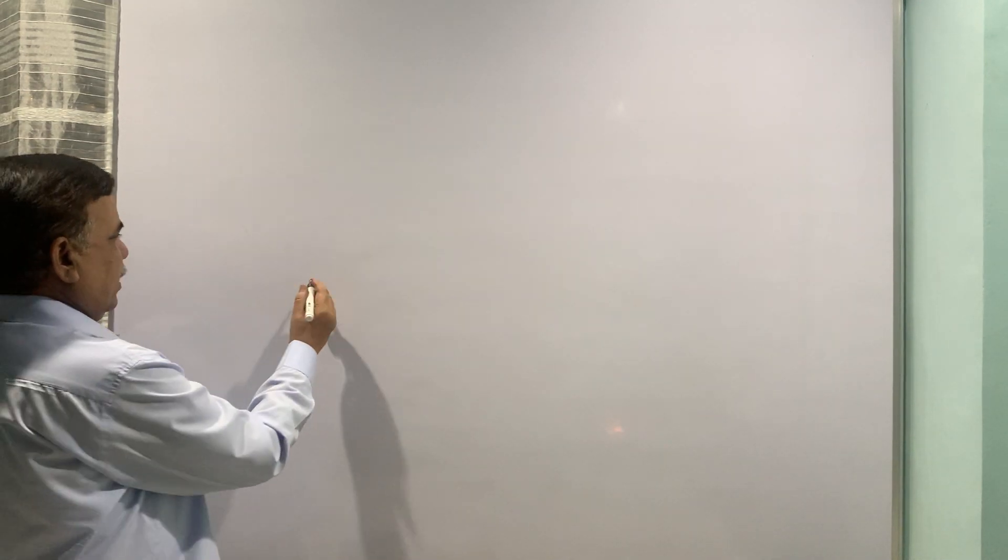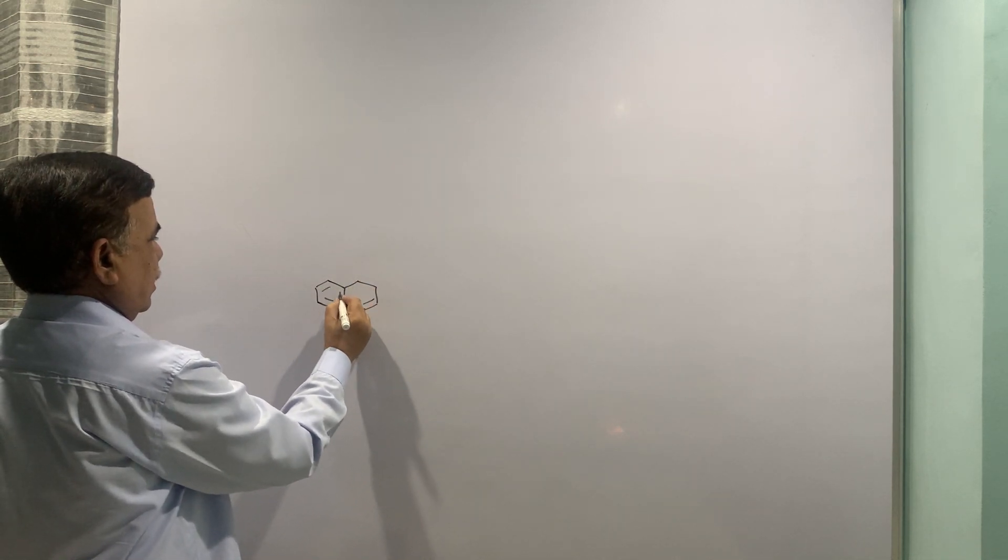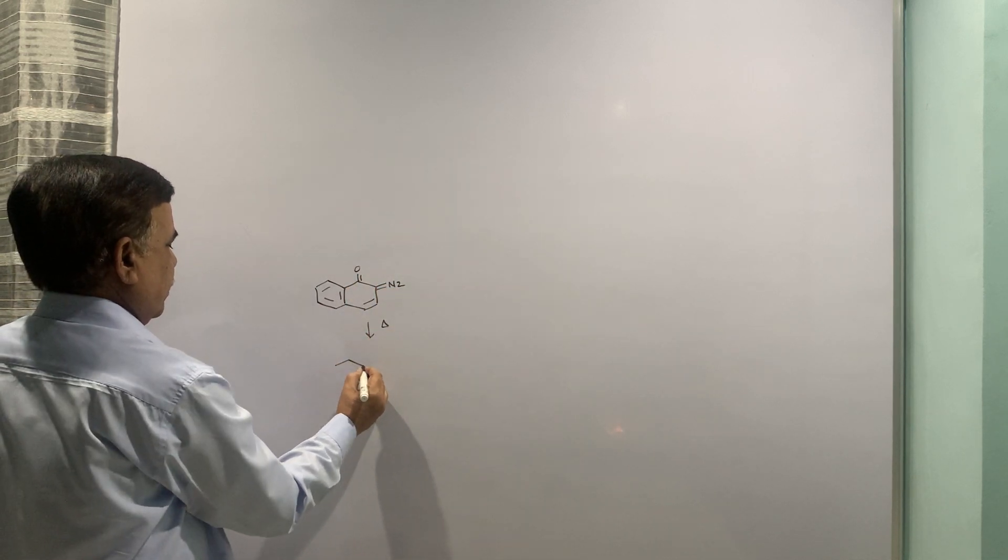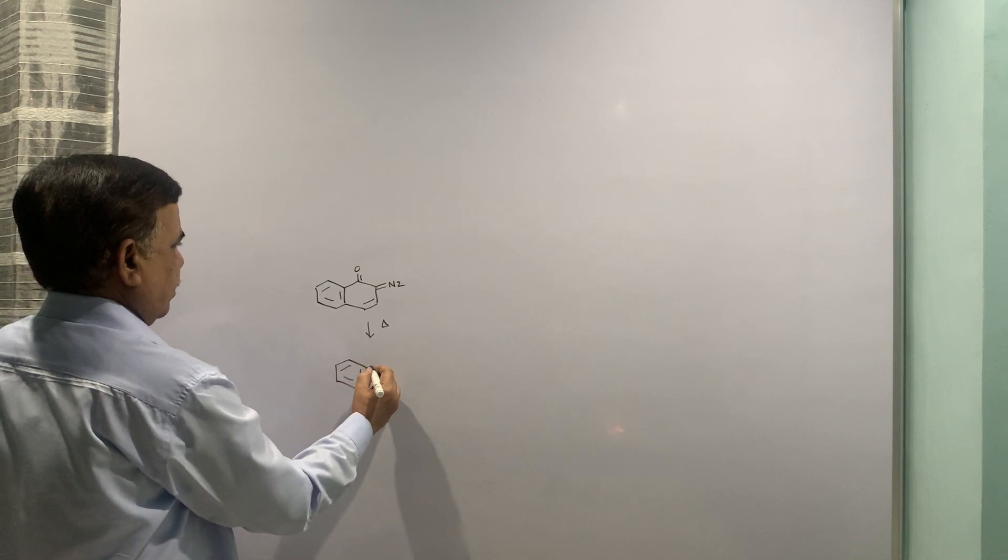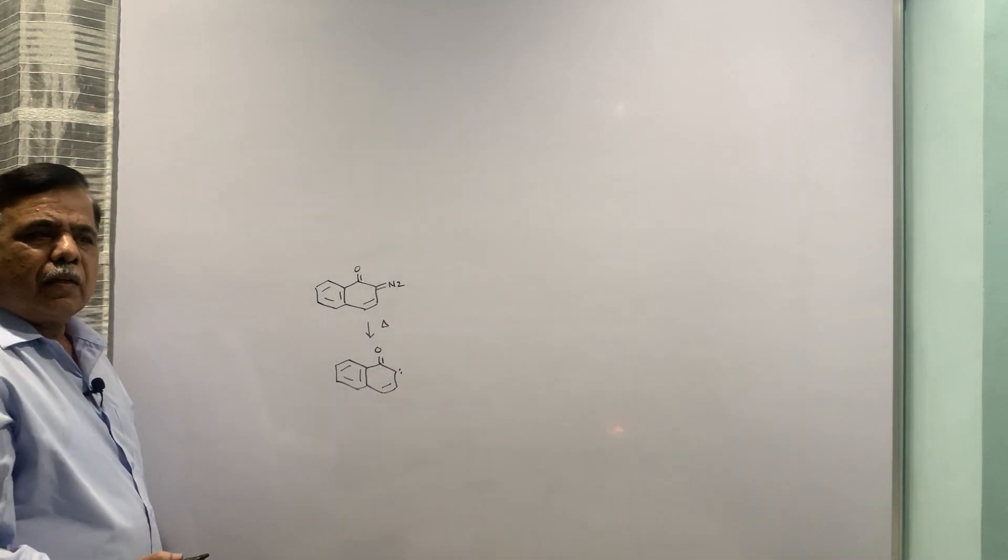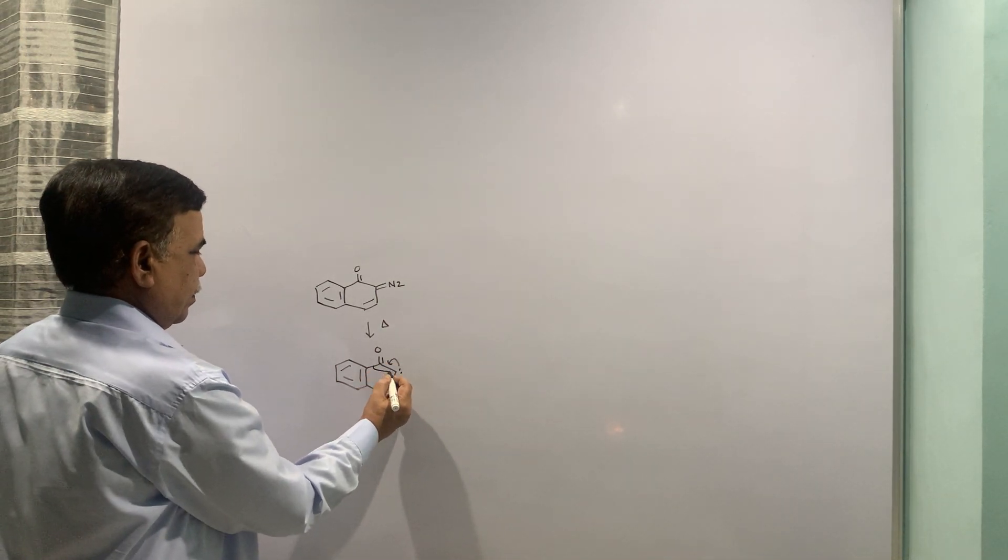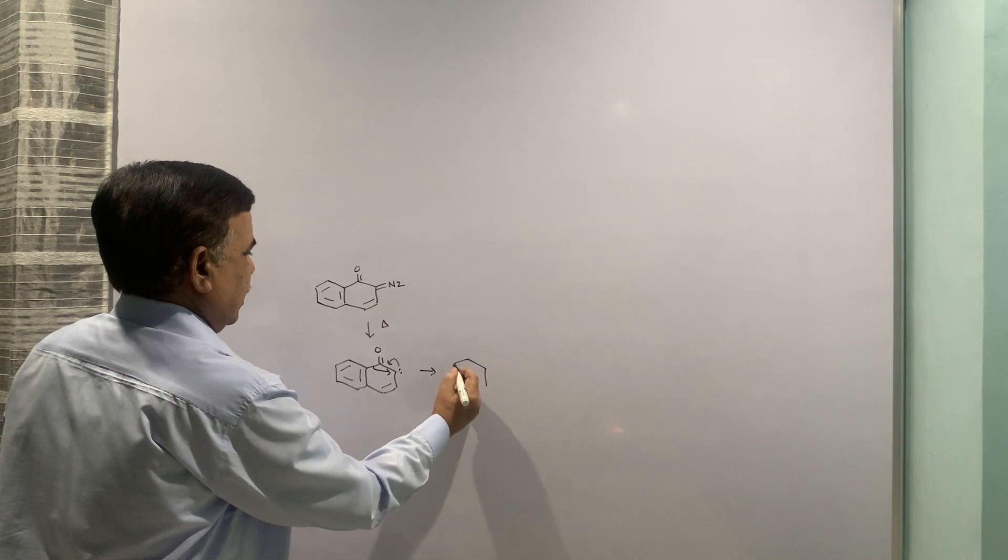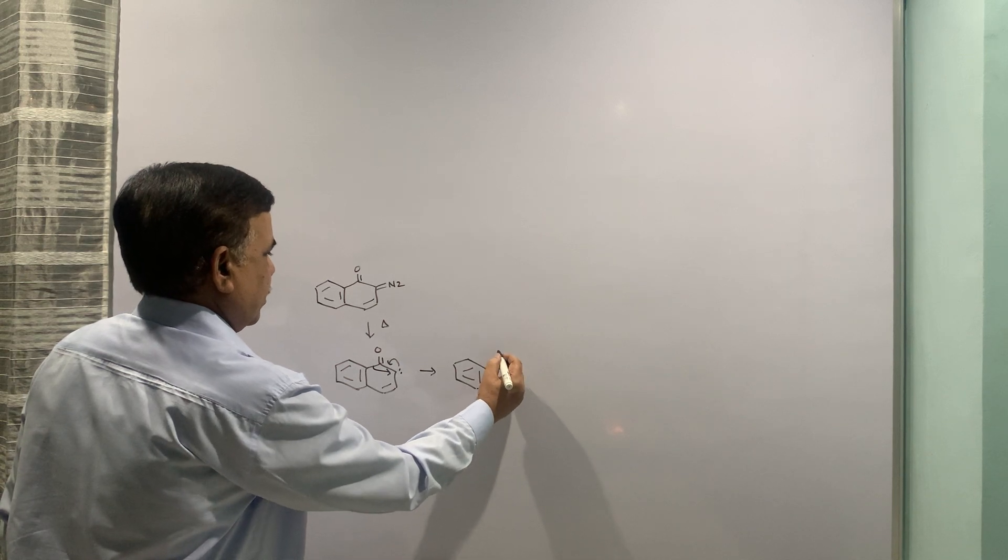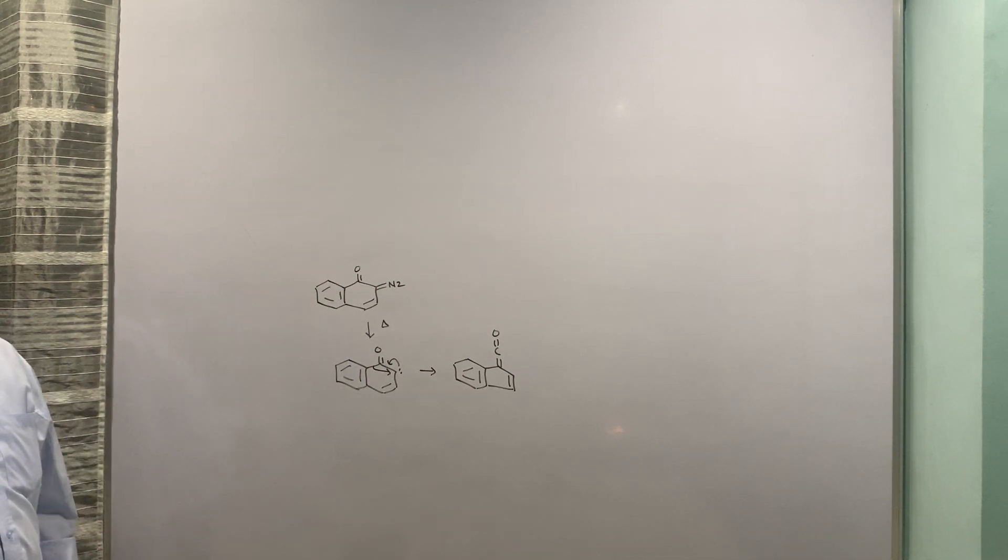The next one is, when you heat it this will give rise to this. This comes back, comes here and you get the ring contraction. This ring contraction gives ketene. So this is the Wolff rearrangement when diazo ketones are heated.